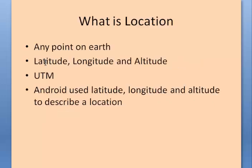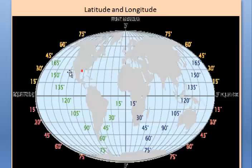What is location? A location is any point on earth. It can be described using latitude, longitude, and altitude. There is one more coordinate system called UTM, but Android uses latitude, longitude, and altitude to describe your location.